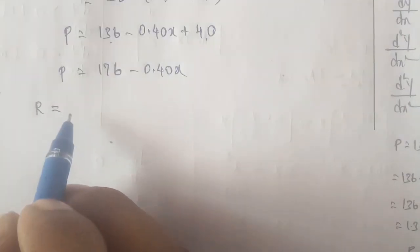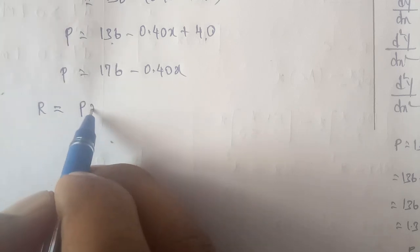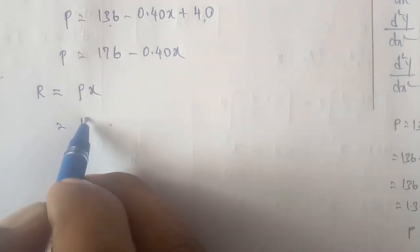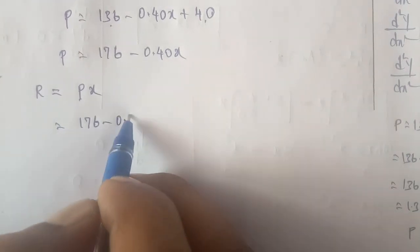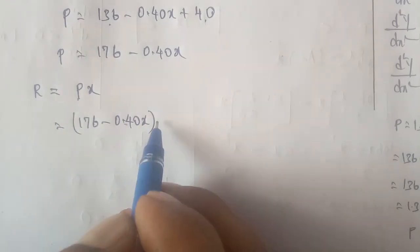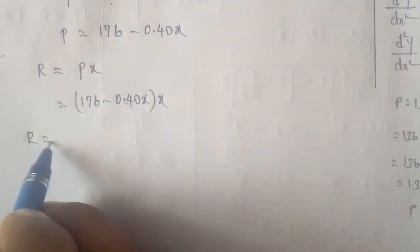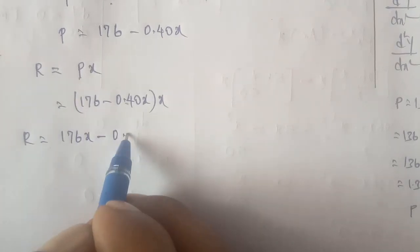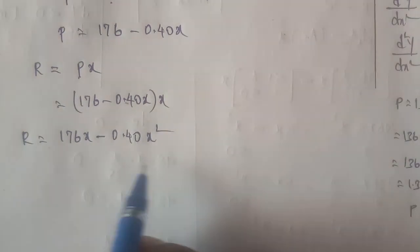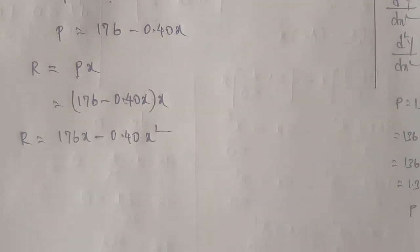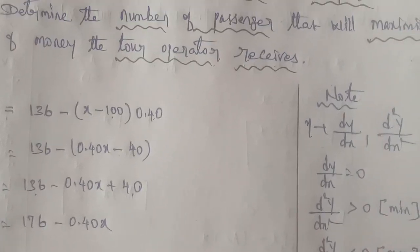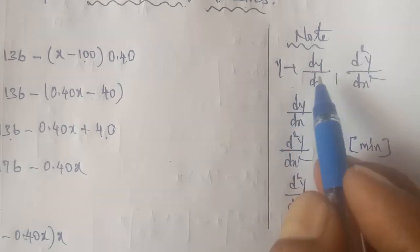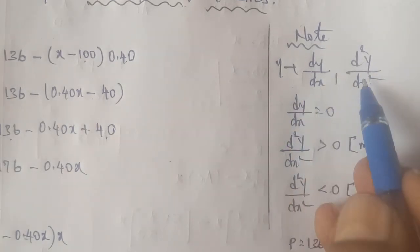The revenue R is equal to x times (136 minus 0.40 times (x minus 100)), which gives R = 176x minus 0.40x squared. This is the revenue function R that we need to maximize.